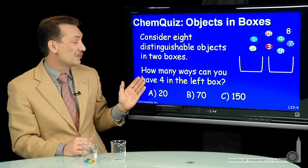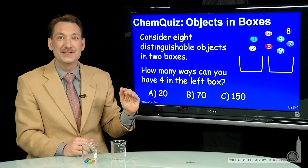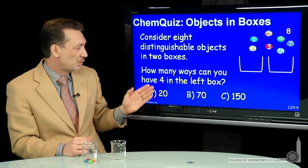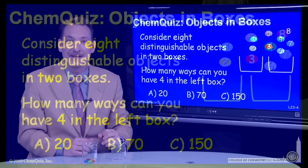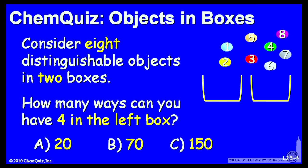How many ways could you arrange four in each box? Is that 20, 70, or 150? Think about that for a minute and make a selection.